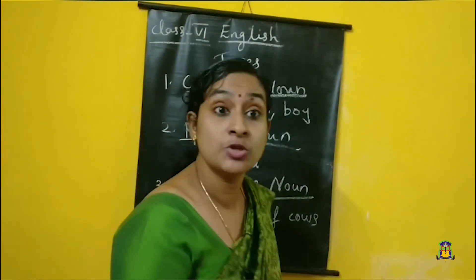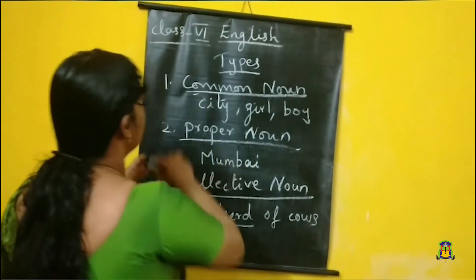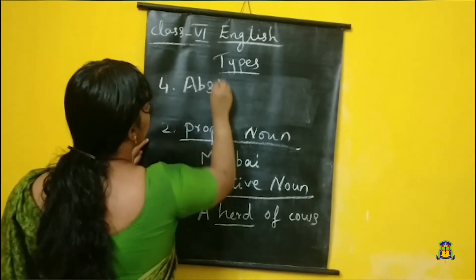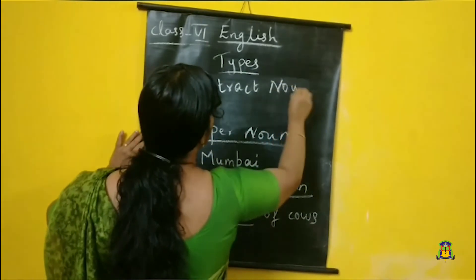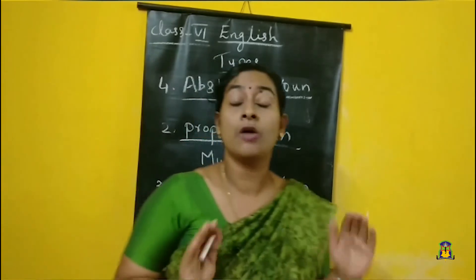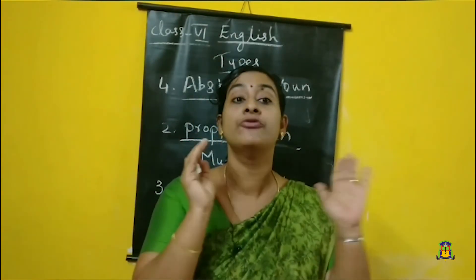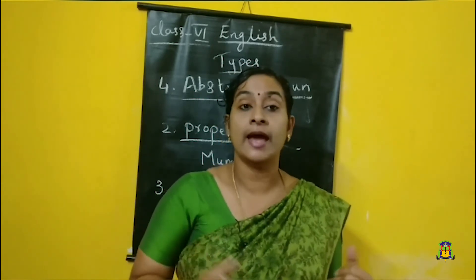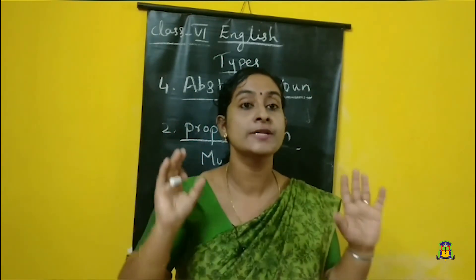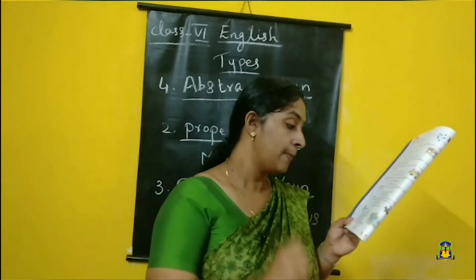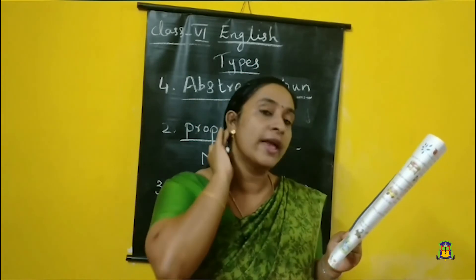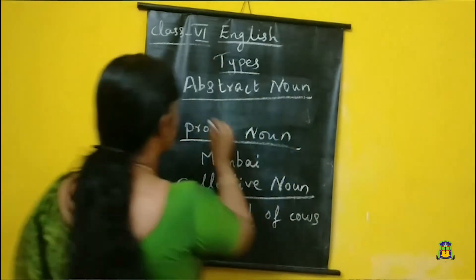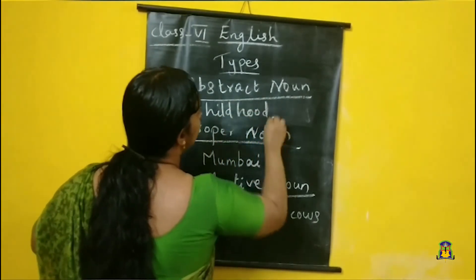The fourth one is abstract noun. This noun we can't see or touch — we can only feel it. That is abstract noun. For example: love, affection, honesty, sincerity — like that, we can feel only, we cannot see or touch. Abstract noun is a name given to a quality, feeling, or ideas. Examples: childhood, bravery, etc.